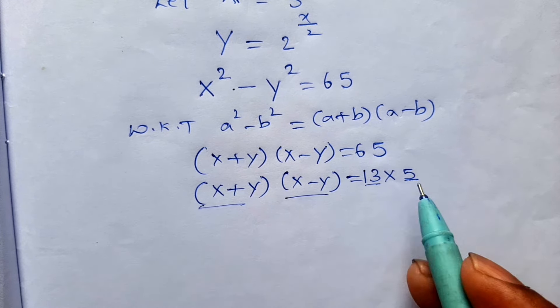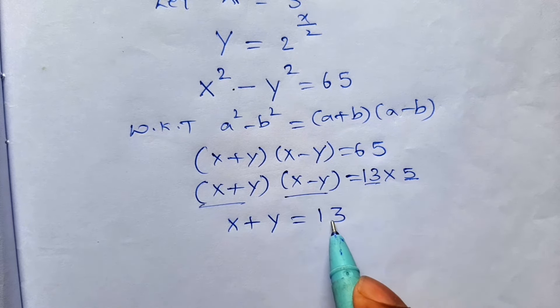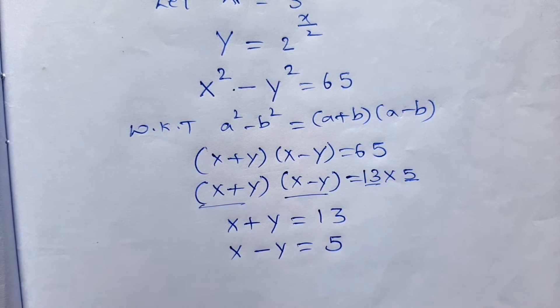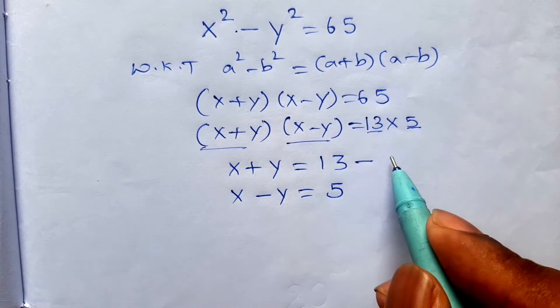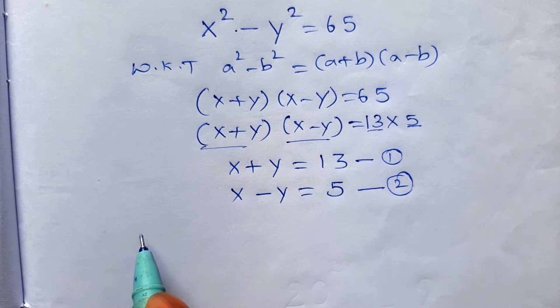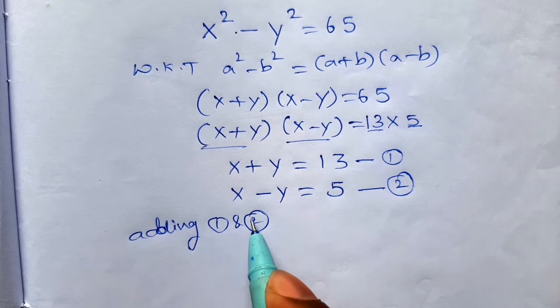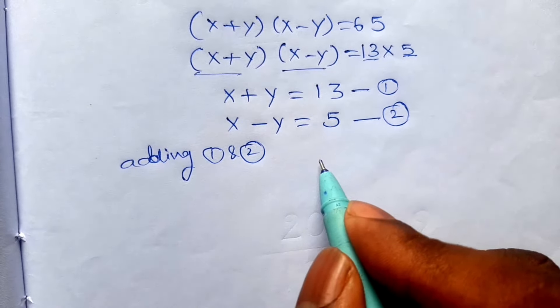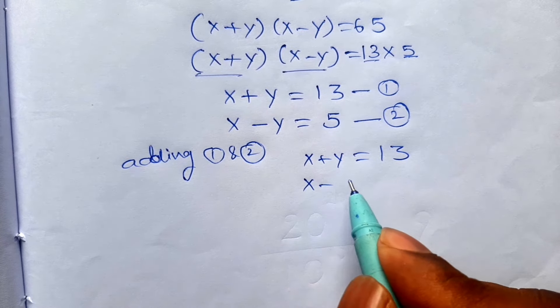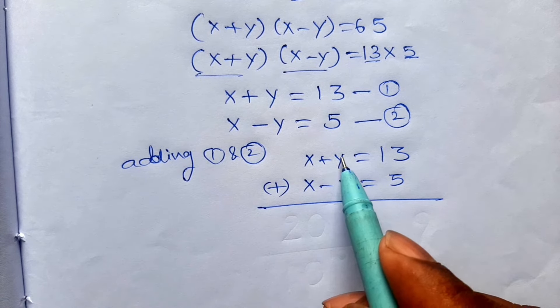After that, x plus y is equal to 13, x minus y is equal to 5. This equation number one, this equation number two. Add them, adding, adding 1 and 2.